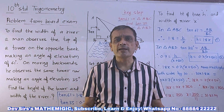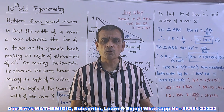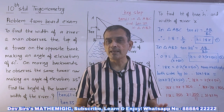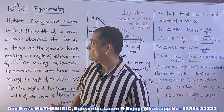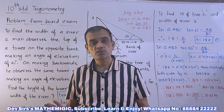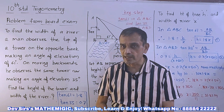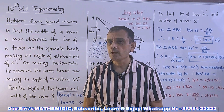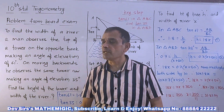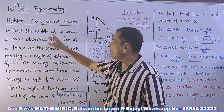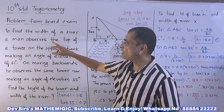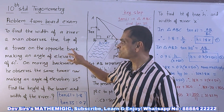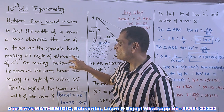Today I am taking one word problem based on applications of trigonometry. This topic — applications of trigonometry — was once or twice asked in the board exam. It is a real life situation problem, so let us see. To find the width of a river, a man observes the top of a tower on the opposite bank making an angle of elevation of 61 degrees.